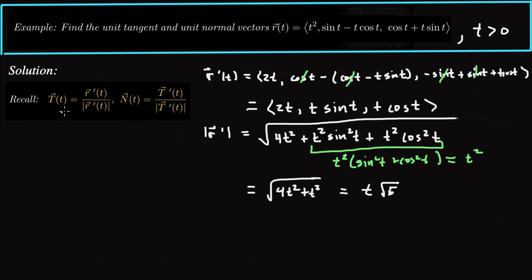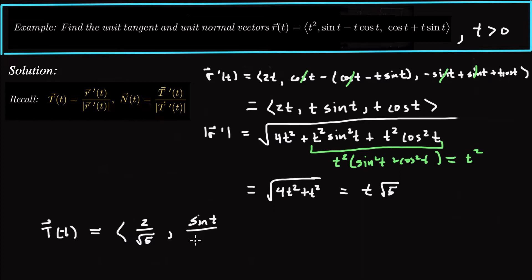Now we can figure out the unit tangent vector capital T. We take r prime divided by t root 5. So capital T equals 2t over t√5, which is 2 over √5 — the t's cancel — then sine t over √5, and cosine t over √5. That is our unit tangent vector.